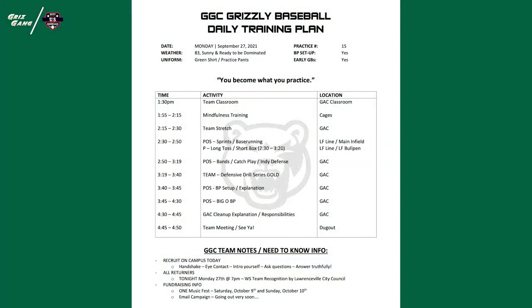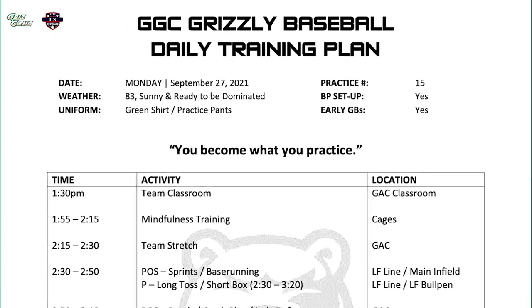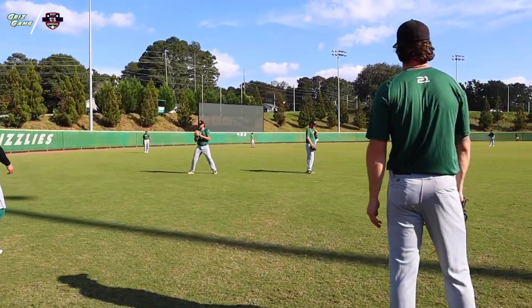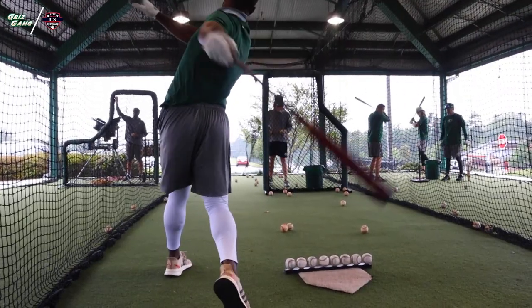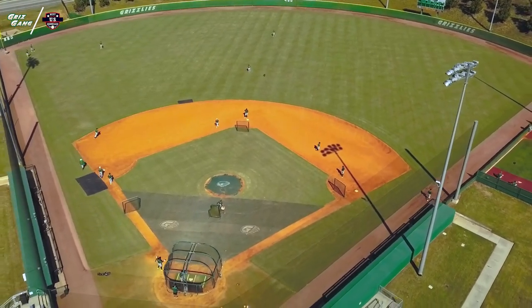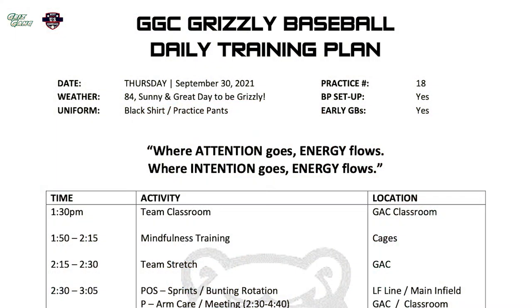As we flash up an example of a training plan from inside our program, we're going to systematically stop along the way, making sure we detail all the various elements within this particular plan. At the very top, we just think this sets the tone for the entire day: the date, the number of practice, the weather we can plan for that day, what we're wearing — our team wears the exact same thing as a group each day, whether that's a color shirt, shorts, or practice pants. The BP setup and early ground balls lets our guys know what might happen pre-practice. We also put a quote of the day, just something that sets the tone from an attitude or perspective for our guys, and we make sure those are set every single day.